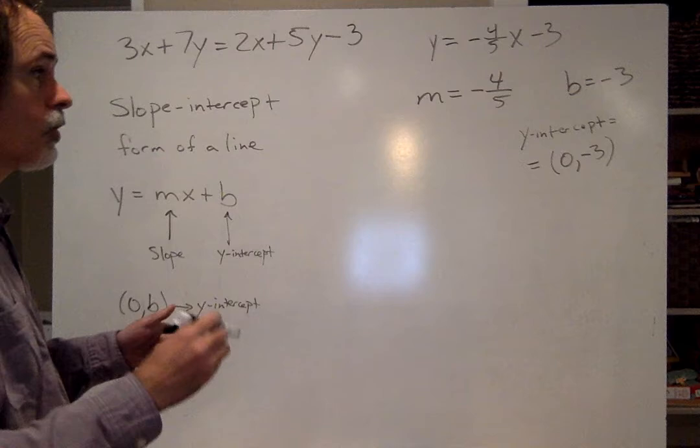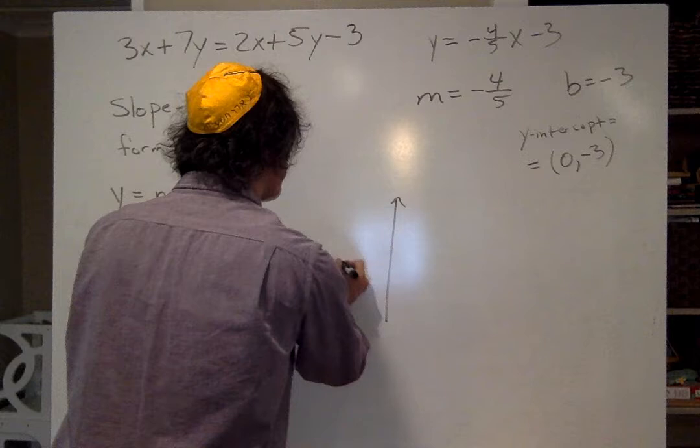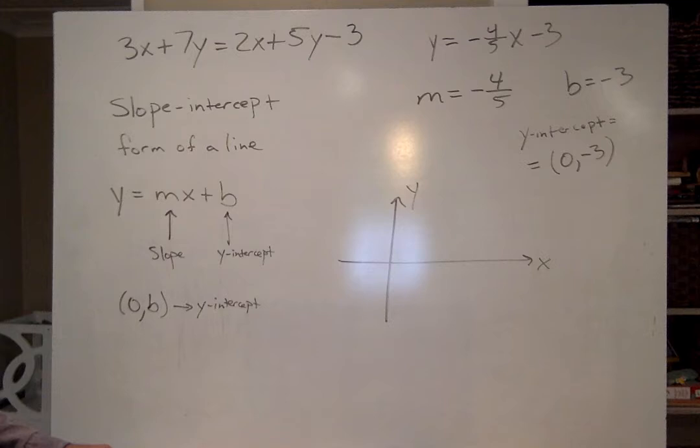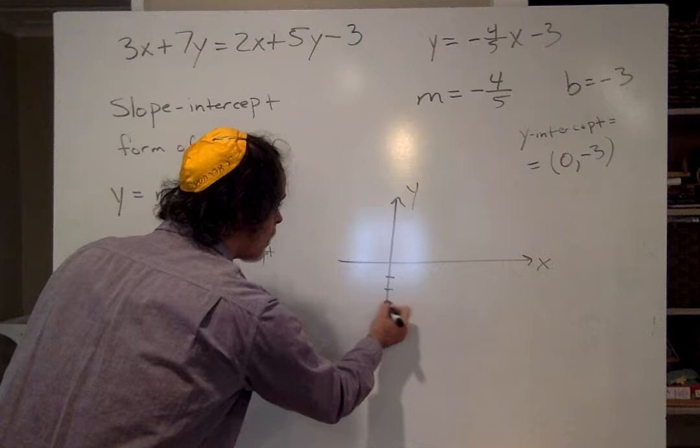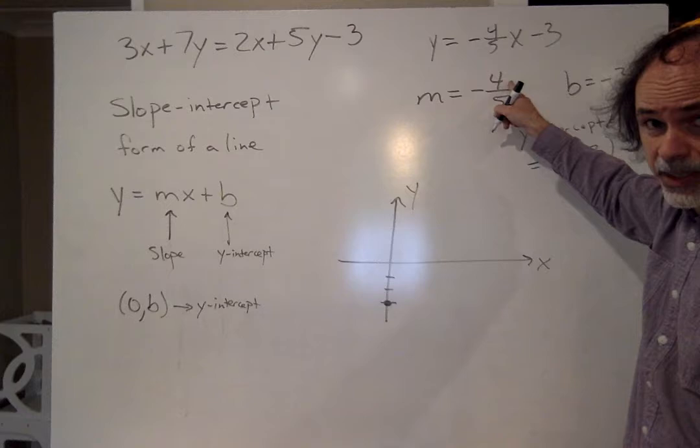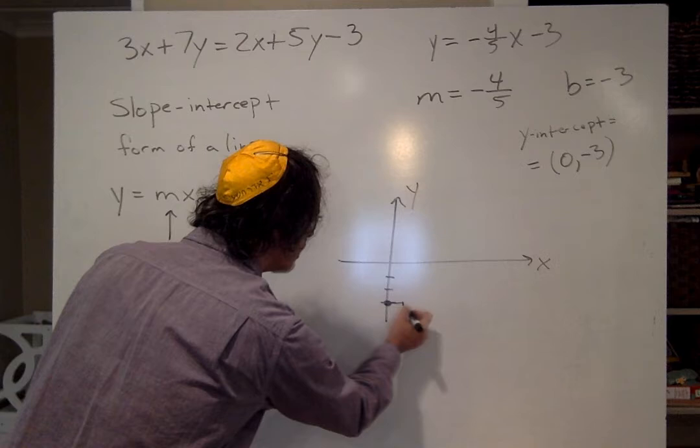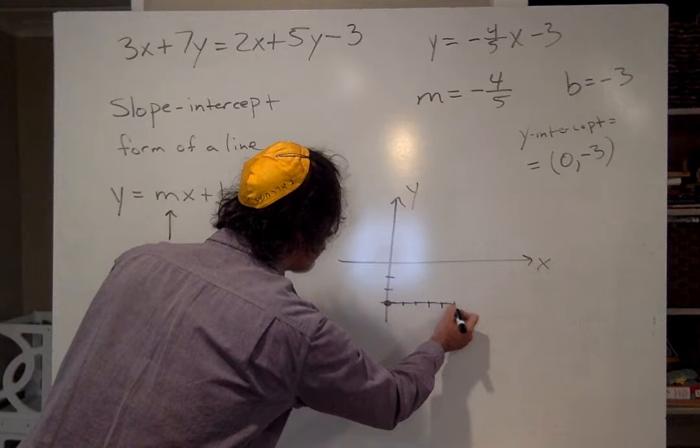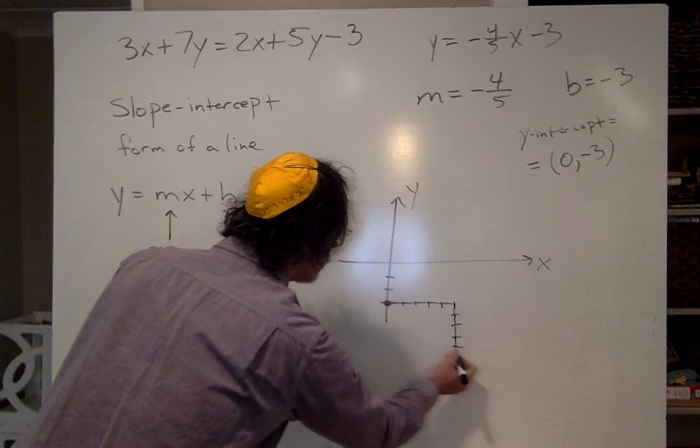Okay. This is really easy to use. Now I'm just going to graph this line. Watch how easy it is to graph. There's my x and y. The y-intercept is 0 minus 3, so that means down 1, 2, 3. There's the y-intercept. That's the starting point for my line. And the rule is I go right 5 and up negative 4 or right 5 and down 4. So 1, 2, 3, 4, 5 and down 4. 1, 2, 3, 4.